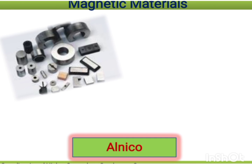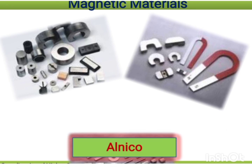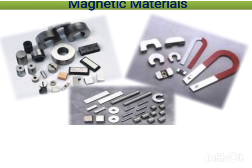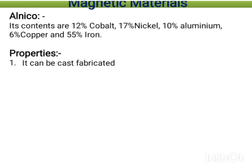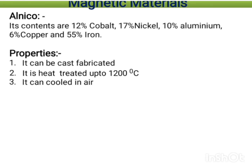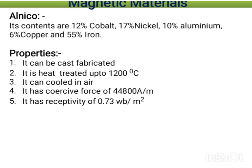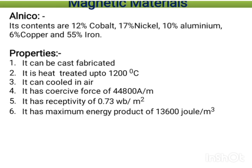Alnico — the name itself tells you it contains aluminum, nickel, and cobalt. It contains 12 percent cobalt, some nickel, 10 percent aluminum, 6 percent copper, and 55 percent iron. It is used in all cases where a permanent cast iron magnet can be used. Properties: it can be cast and fabricated; heat treated up to 1200 degrees Celsius; it can cool in air; coercive force of 44,800 A/m; retentivity of 0.7 Weber per meter square; maximum energy product of 13,600 J/m³; it is hard and brittle.